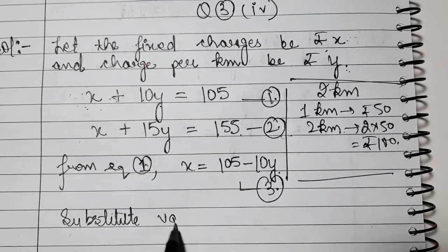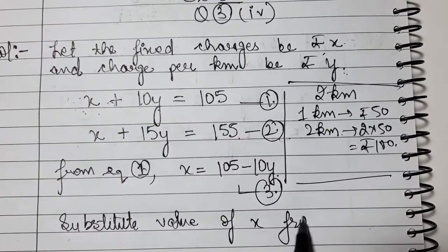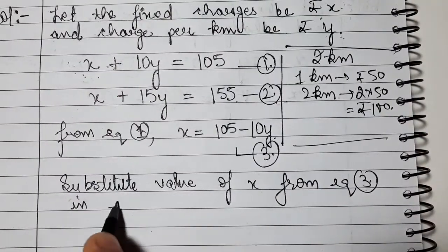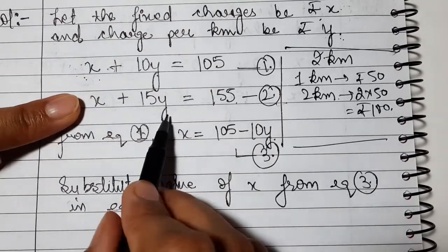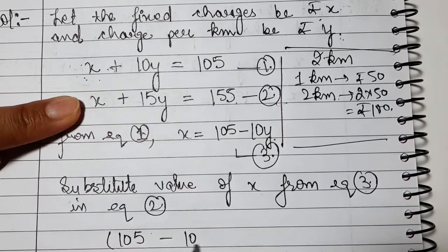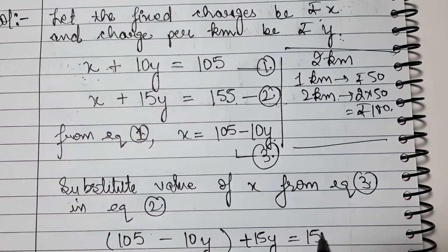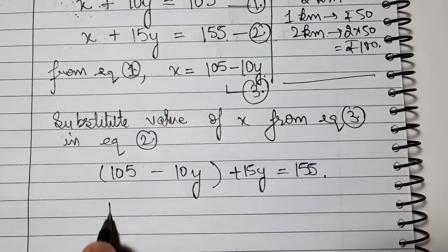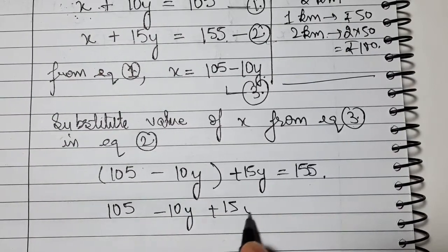Substitute value of x from equation number 3 in equation number 2. x plus 15y - the value of x was 105 minus 10y - plus 15y equals 155.